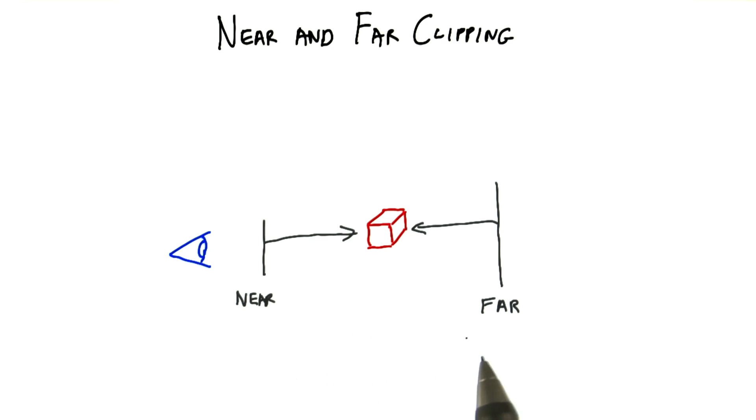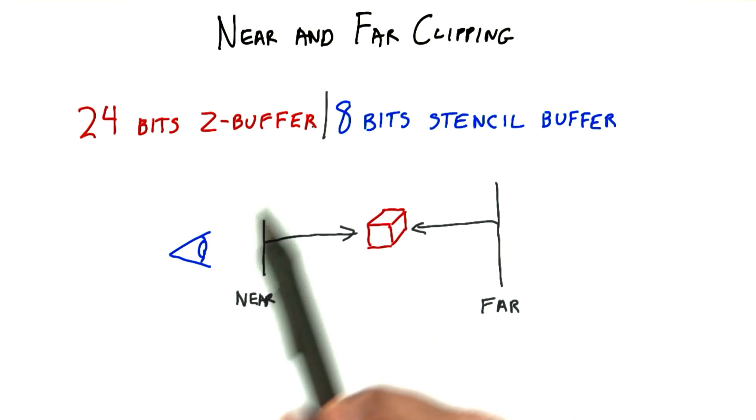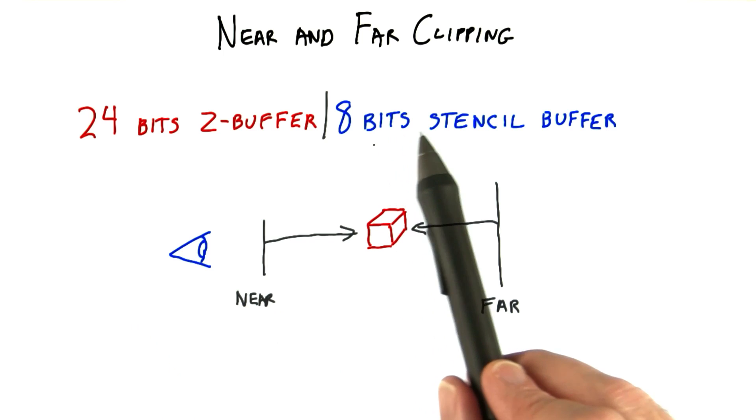The near and far values determine how the z-buffer value is computed. Internally, the z-buffer value typically gets stored as an integer value with some number of bits. For example, 24 bits is common, with 8 bits for what's called the stencil buffer.